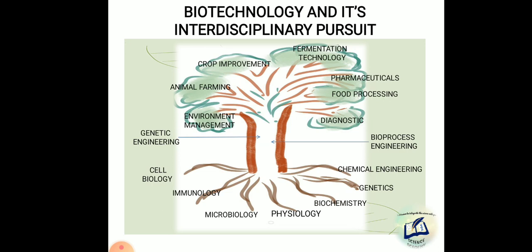The branches — the upper part of the tree — represent agricultural biotechnology and crop improvement, animal farming, environmental management, pharmaceuticals, food processing, diagnostics, and fermentation technology. These are the end products of biotechnology. We can divide biotechnology in this manner as well. Thank you for listening — we will discuss more in our next videos. Keep watching and do subscribe to our channel.